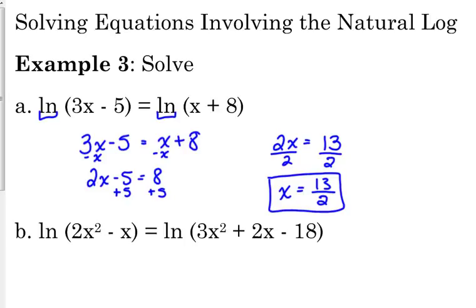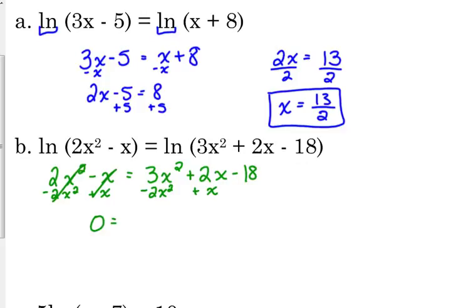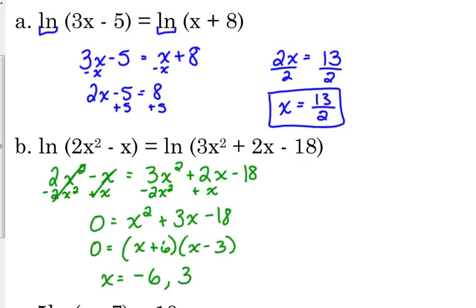Example B. Same thing here. We've got the natural log on both sides, so we just set what's inside the logarithm equal to 2x² minus x is equal to 3x² plus 2x minus 18. This is a quadratic equation. We've got x², so we want everything on one side. x² is bigger on the right side, so I'm going to move everything to the right side. Subtract 2x² from both sides. And I'm going to go ahead and add the x. Gone on the left side. 0 is equal to 3 minus 2 is 1. 2 plus 1 is 3. So that factors into x plus 6 times x minus 3. So x equals negative 6 and positive 3.